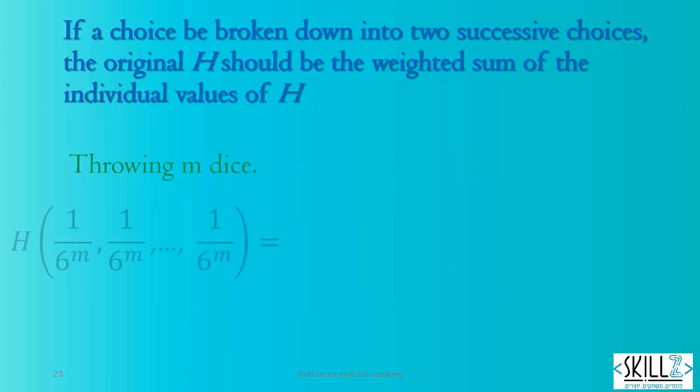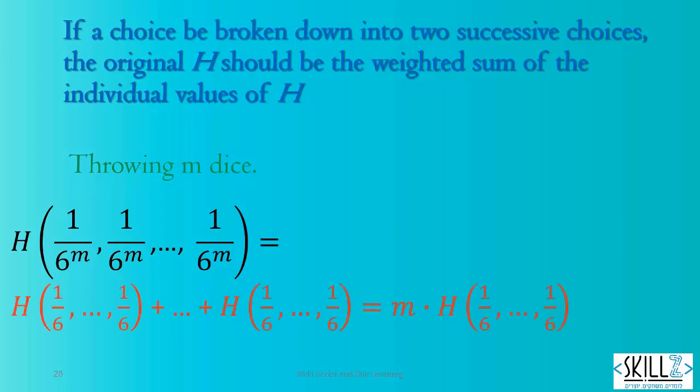Throwing M dice: There are six to the power of M possible outcomes. The entropy is H of six to the power of M events with probability one divided by six to the power of M. But it is also M times the entropy of throwing one die.